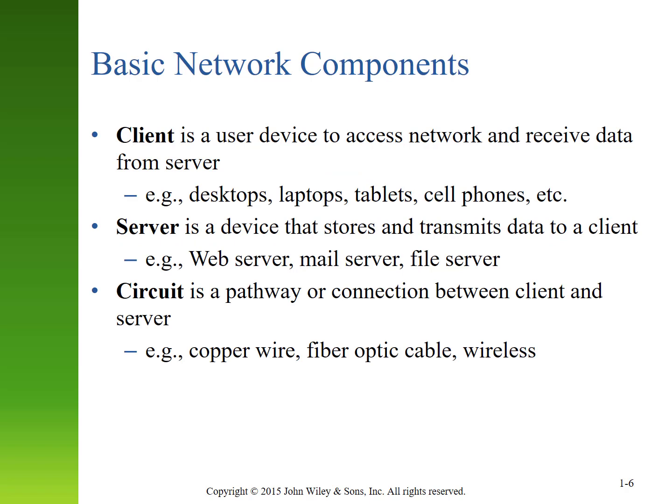When we talk about a computer network, we typically talk about clients and servers. Clients are any device that we use to connect to the network and receive data from a server. Common clients would be things like desktop or laptop computers, your tablets, your cell phones, but they could also be a variety of other devices — maybe your thermostat is a smart thermostat and it receives information from the internet, or maybe you have an alarm system that's connected to the cloud. All of those various devices could potentially be clients.